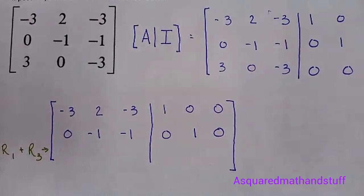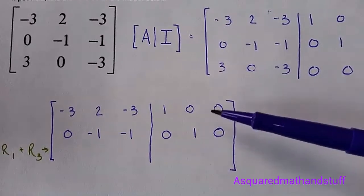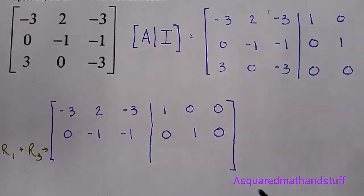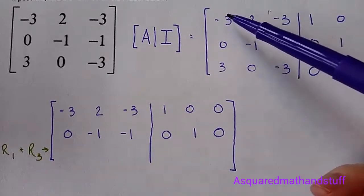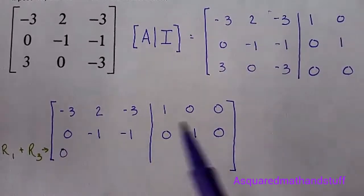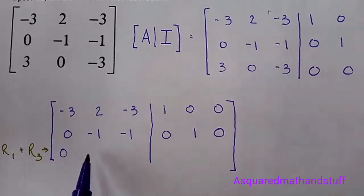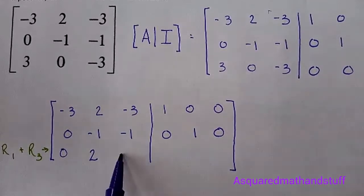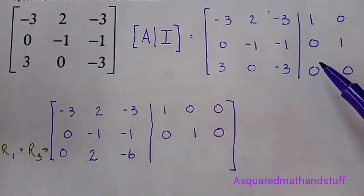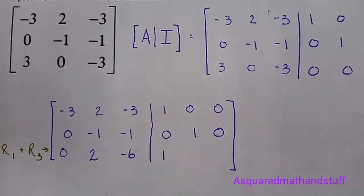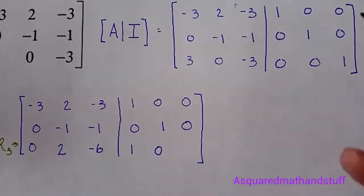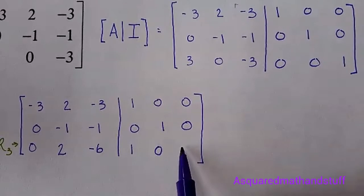I hope you don't mind that I am cutting out the parts of the video where I am just rewriting some rows to keep this a little bit shorter so you don't have to fast forward as much. So what we are looking at here is just adding row 1 to row 3. Adding negative 3 plus 3 gives us our 0. We'll have 2 plus 0, we'll have 2. And then negative 3 plus negative 3 gives us negative 6. 1 plus 0 gives us 1. 0 plus 0 is 0. And then finally 0 plus 1 gives us 1.